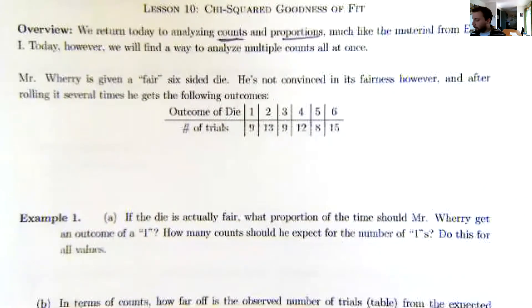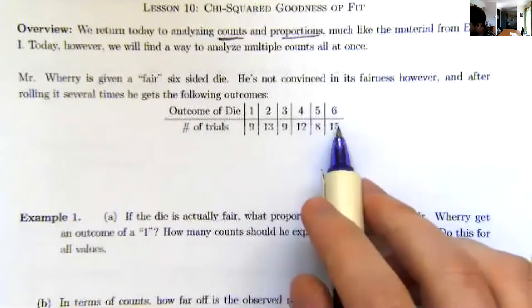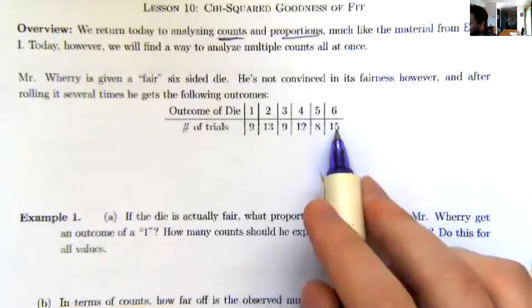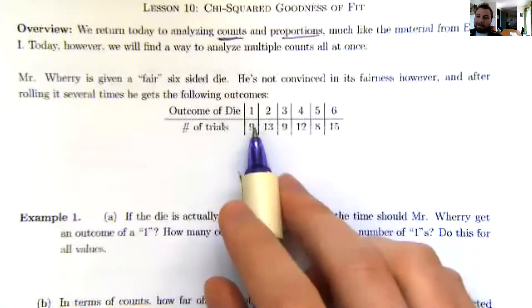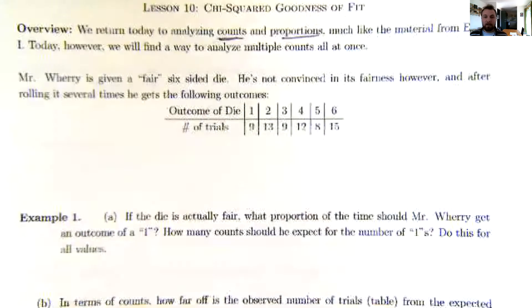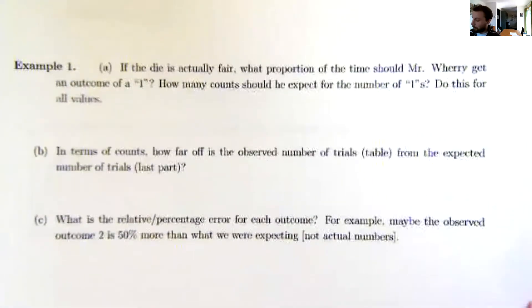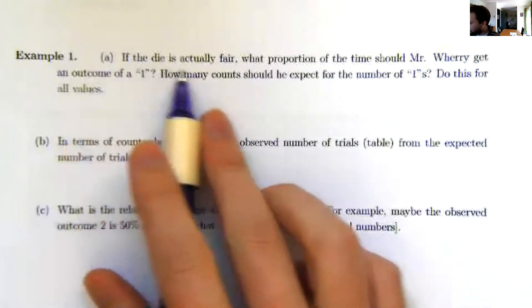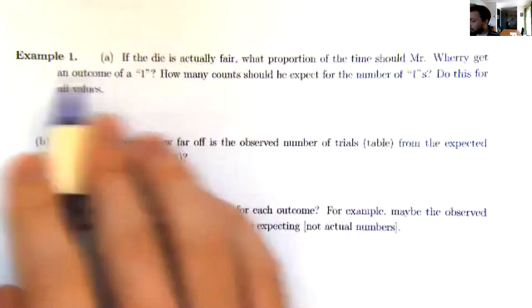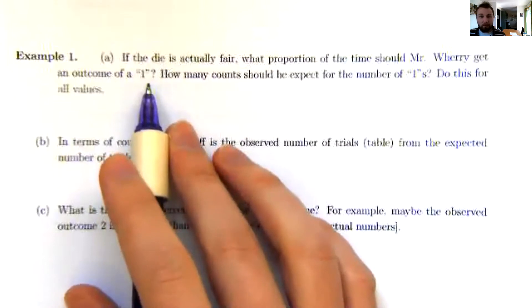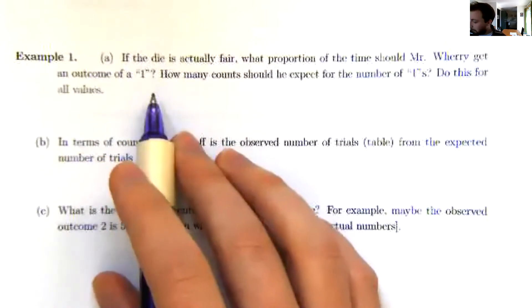Let's start with a problem. Suppose I'm given a six-sided die and I'm told that it's fair. I'm not convinced that it's fair, because I'm seeing six show up 15 times and one show up only nine times. That doesn't seem like it should happen on a fair die—that's way too many sixes.